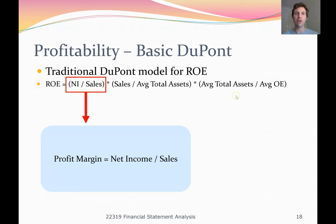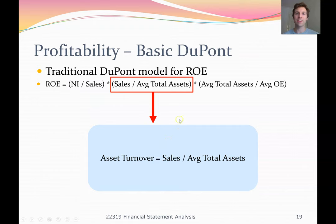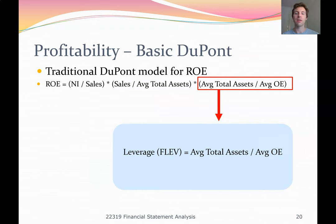Stepping through the DuPont breakdown: the first term, net income over sales, is called the profit margin — it's part of the operations of the business. The next term, sales over average total assets, is called asset turnover, and it gives us an indication of the firm's operating performance. The final term, average total assets divided by average owner's equity, is called financial leverage, and it tells us about the financing aspects of the business. In theory, DuPont analysis breaks down operating activities — profit margin and asset turnover — from financing activities.